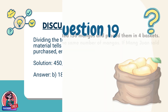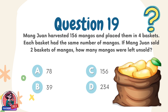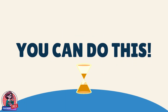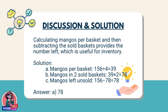Question 19. Mang Juan harvested 156 mangoes and placed them in 4 baskets. Each basket had the same number of mangoes. If Mang Juan sold 2 baskets of mangoes, how many mangoes were left unsold? Choices: A. 78, B. 39, C. 156, D. 234. Discussion: Calculating mangoes per basket and then subtracting the sold baskets provides the number left, which is useful for inventory. Solution: 1) Mangoes per basket: 156 ÷ 4 = 39. 2) Mangoes in two sold baskets: 39 × 2 = 78. 3) Mangoes left unsold: 156 − 78 = 78. Answer: A. 78.